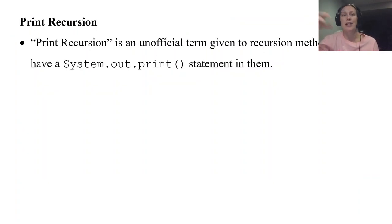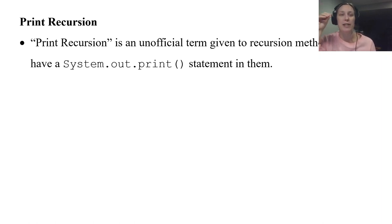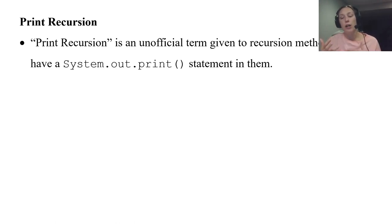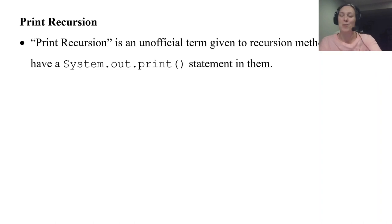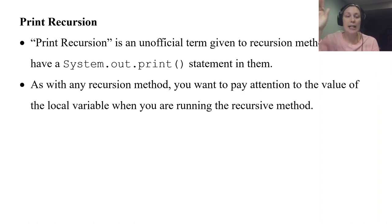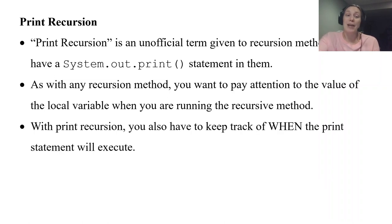We'll start off with some print recursion. Print recursion is something I think I made up — that's just what I call recursive methods that have a System.out.print statement in them. Since recursion involves calling a method itself, you'll have quite a few method calls, and even though there's a single print statement, it's going to be called multiple times. You have to be careful about when the print statement executes and what local variables it uses.